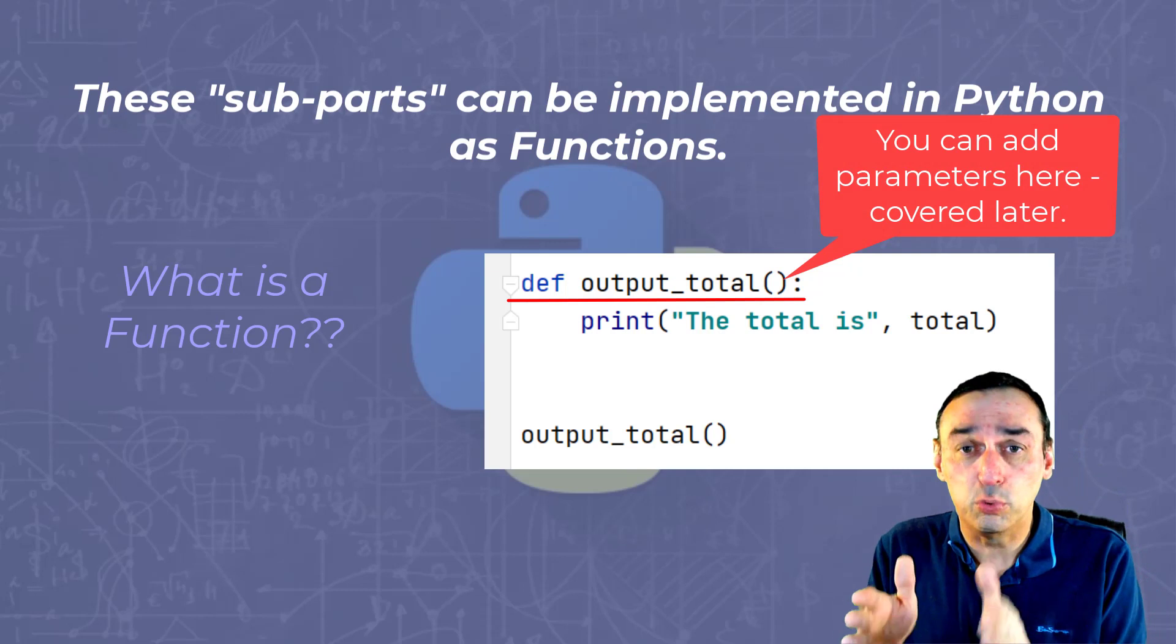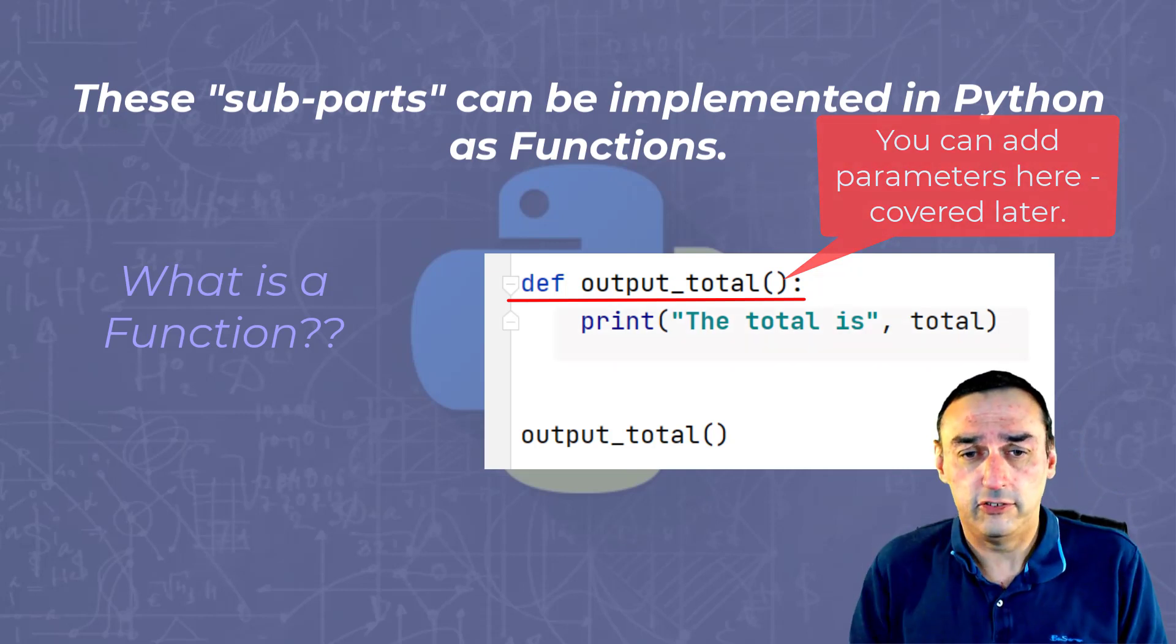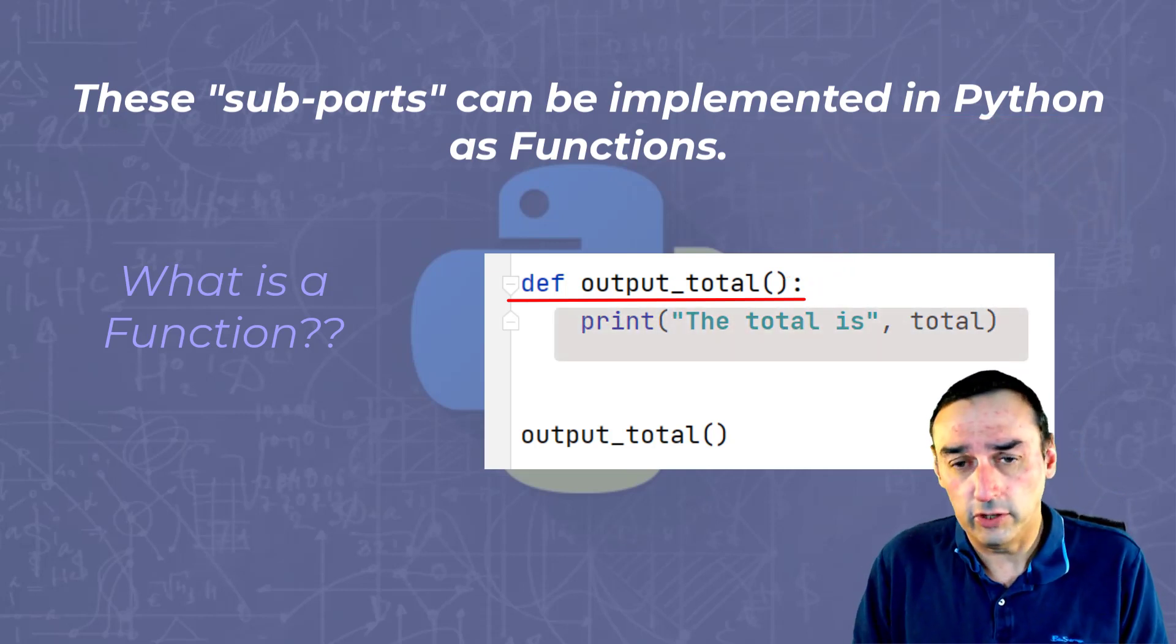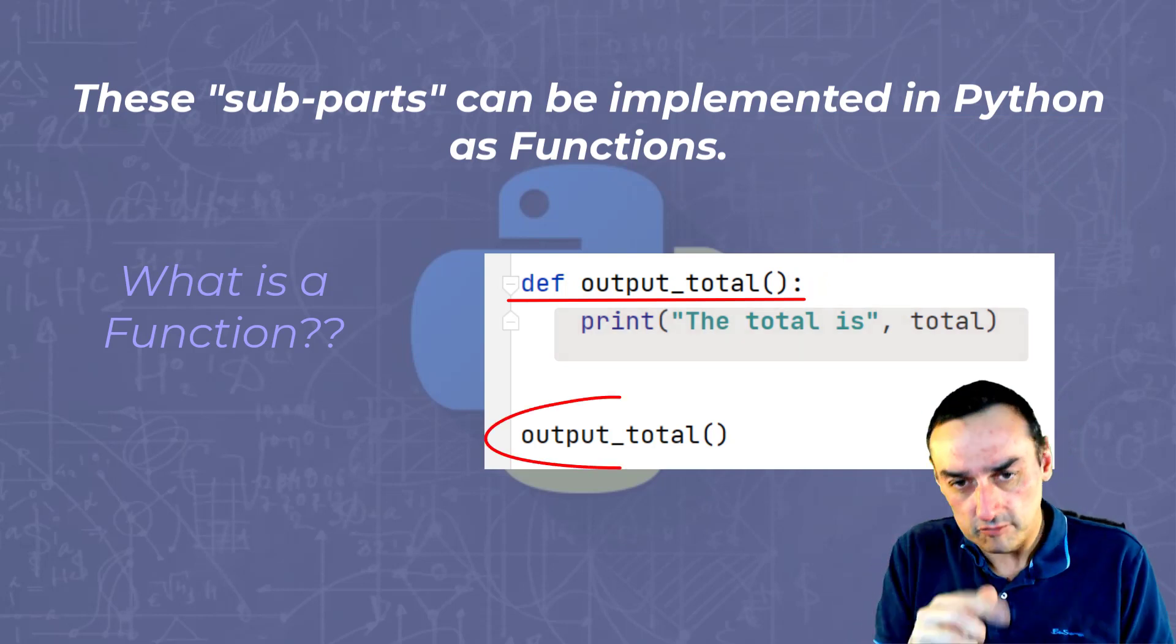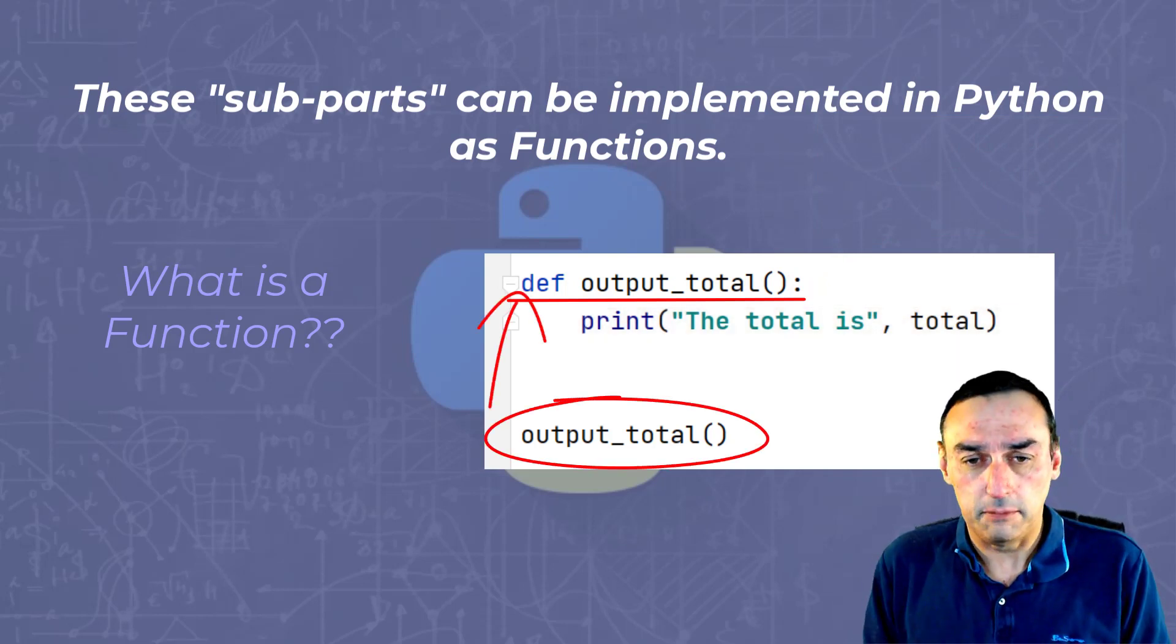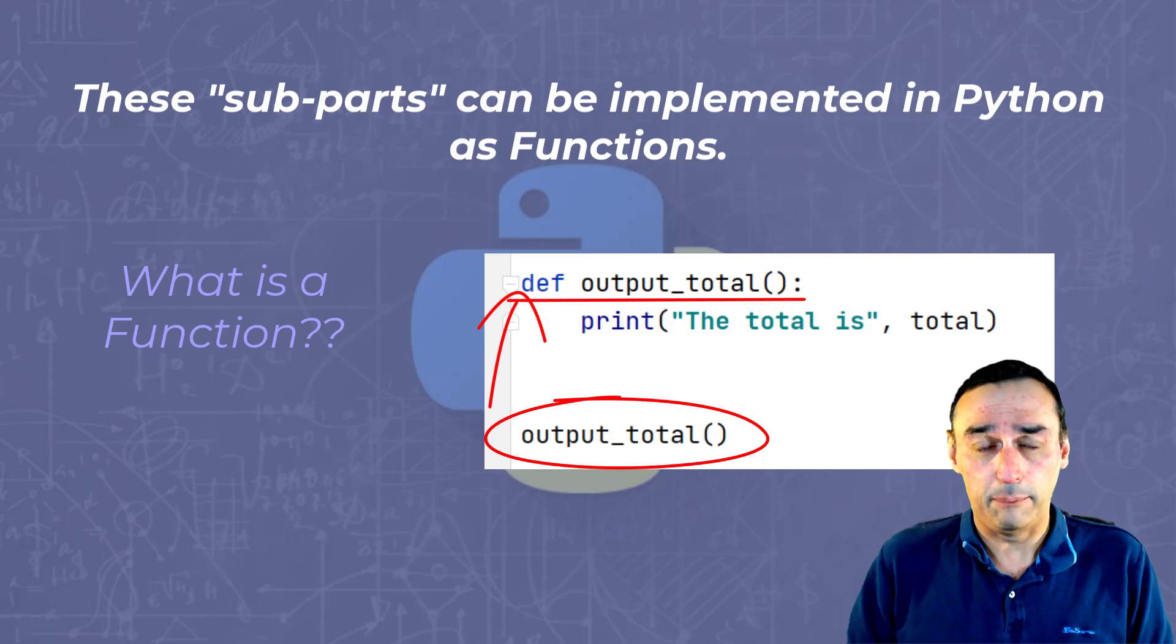And then as part of that function, you would define the program. As it's shown here, print the total is total. Now to call that function, we simply write the name of the function in the main part of the program, and that will call that particular function.